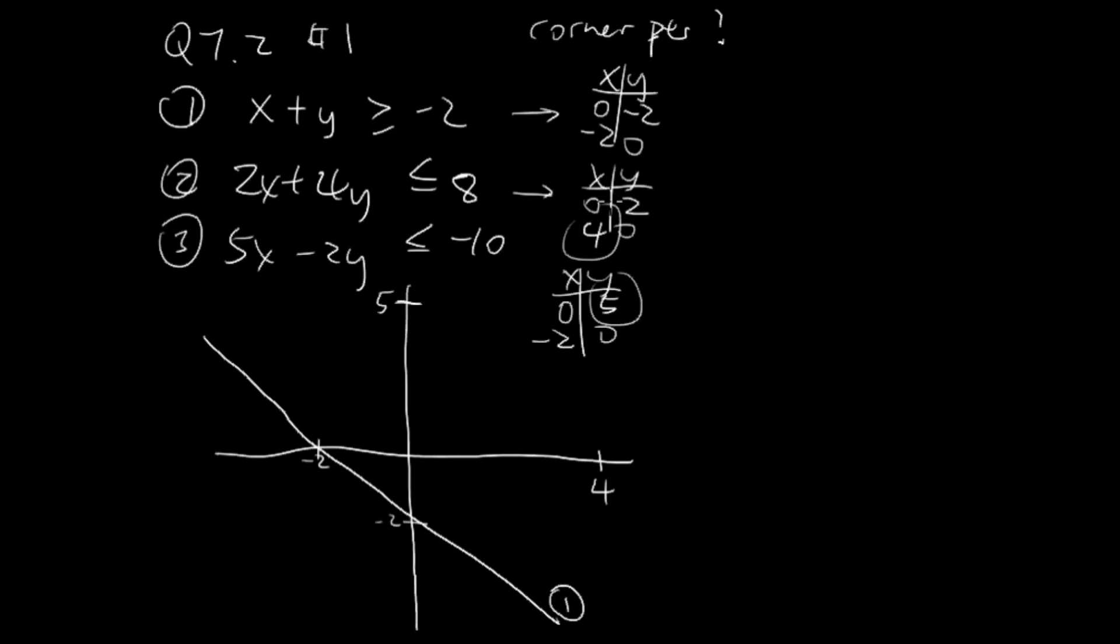I usually do the shading after I plot all the lines. I think that's easier that way. Next, we have y is 2 and x is 4. So about like this. Here's line 2.